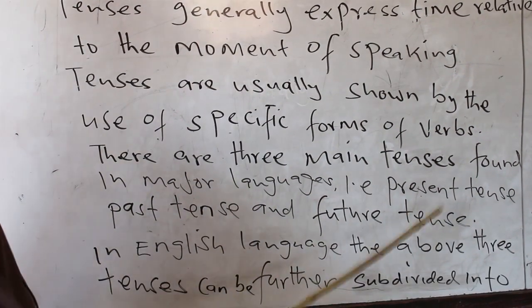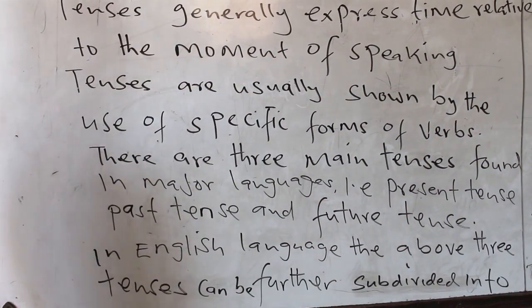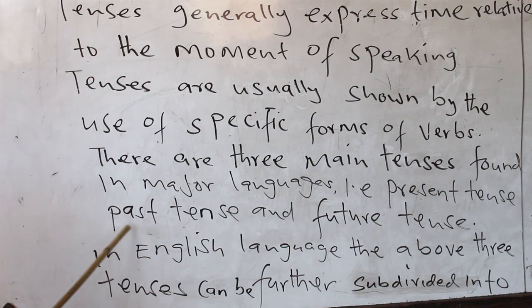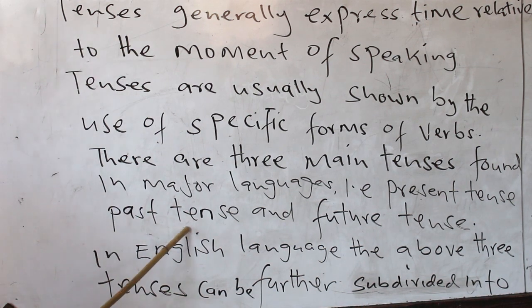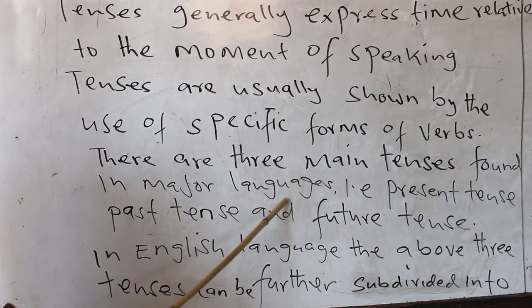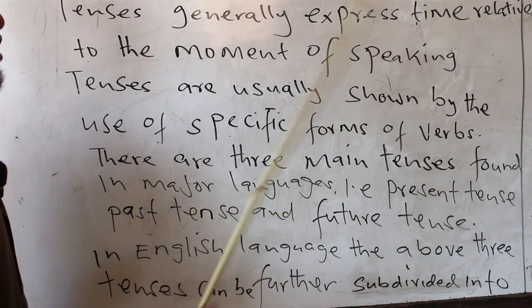There are three main tenses found in major languages: one, present tense; two, past tense; and the third one is the future tense.